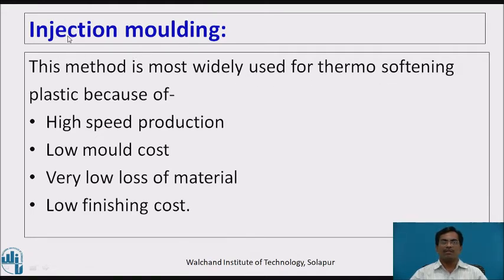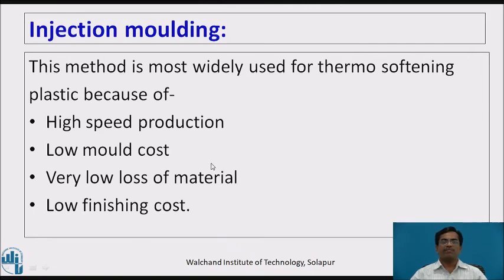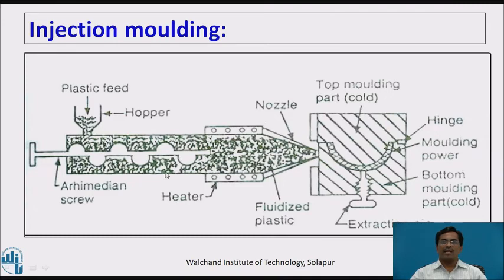The third type of molding is injection molding, which is basically used for thermosoftening type of plastic manufacturing. It is preferred because it has a high speed of production, low mold cost, very low loss of material, and low finishing cost. The diagram shows it consists of a hopper, an Archimedean screw, heaters, and a nozzle. A mold is also provided, which again consists of an extraction pin, a top molding part, and a bottom molding part.